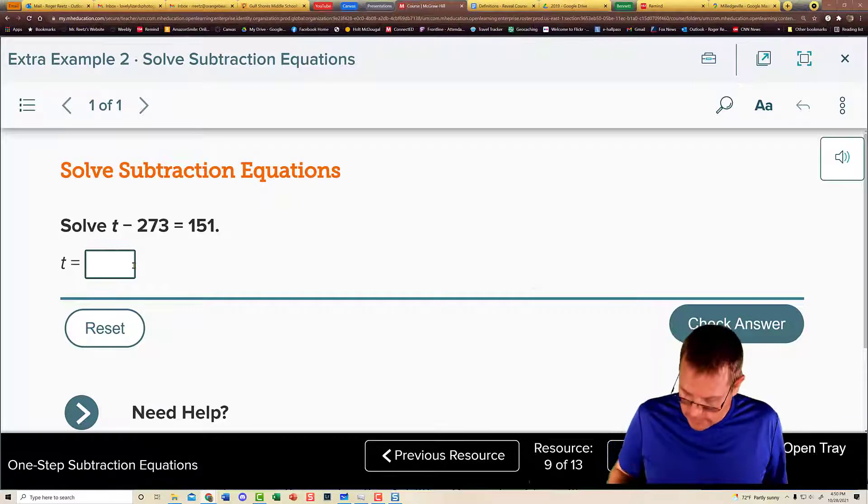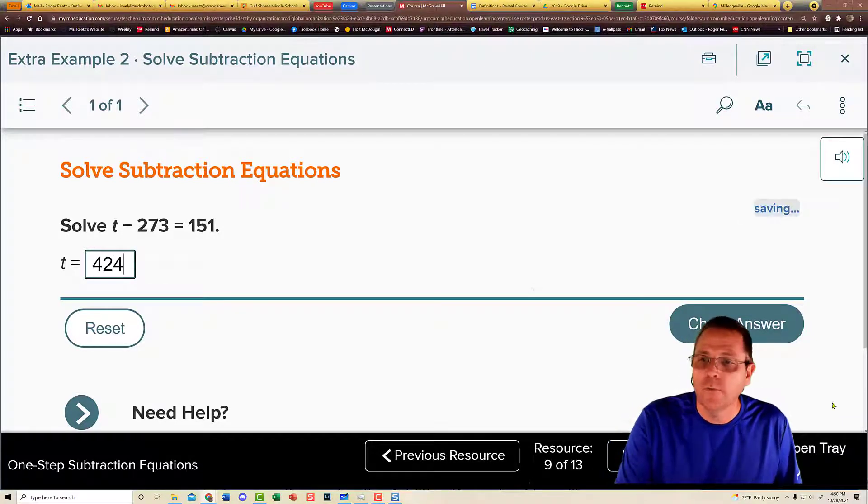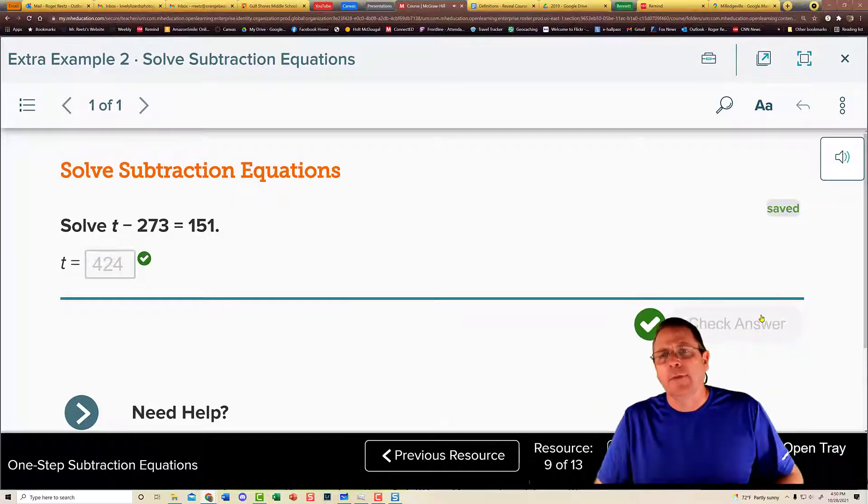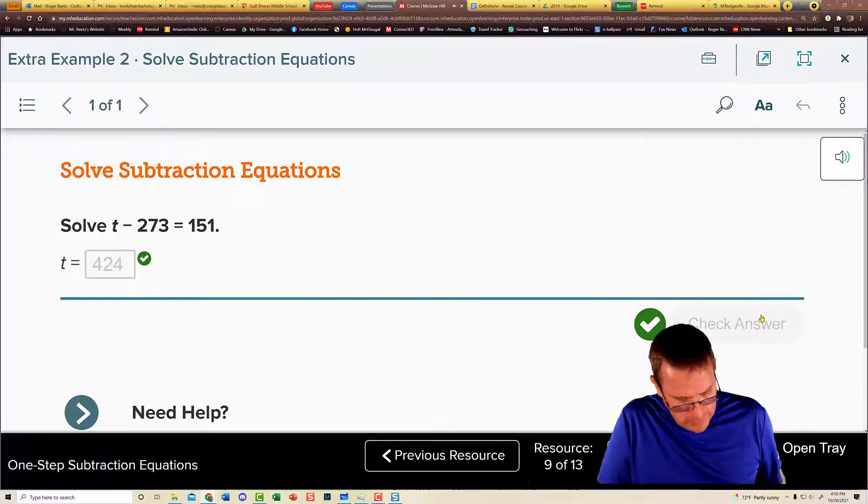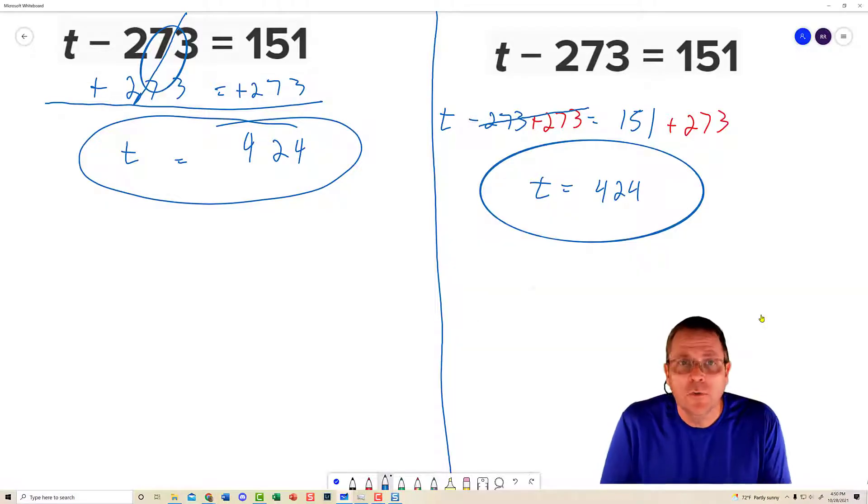Jump back over here. Test our answer. 424. And check. And the answer checks. Super easy. Super neat. You can use either one of those methods to show your work. But you have to show one or the other of them or I can't give you credit for doing it.